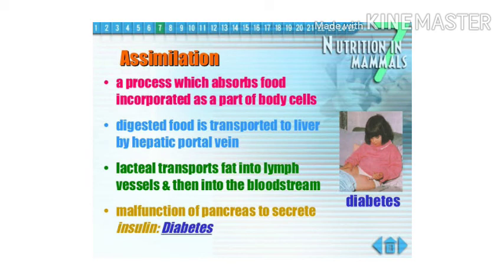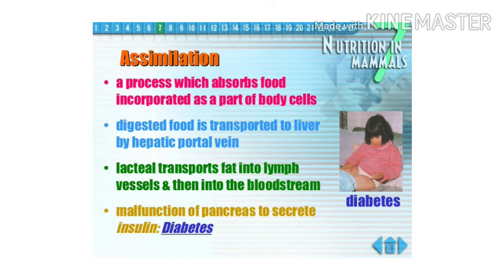Next, we come to assimilation. After absorption, assimilation is the process in which absorbed food is incorporated as part of the body cells. The absorbed food is transported to the liver by the hepatic portal vein. Lacteals transport fat into lymph vessels and then into the bloodstream. Malfunction of the pancreas to secrete insulin leads to diabetes. The assimilation process is the process in which nutrients move to each and every cell, enabling us to work and carry out our life processes.